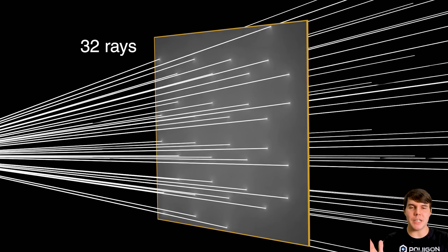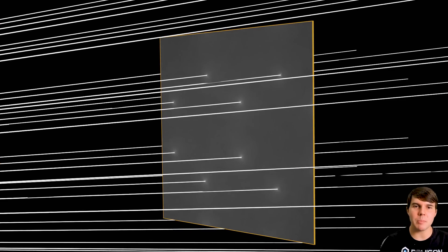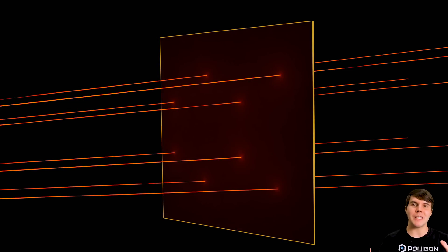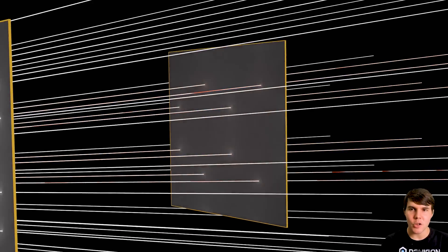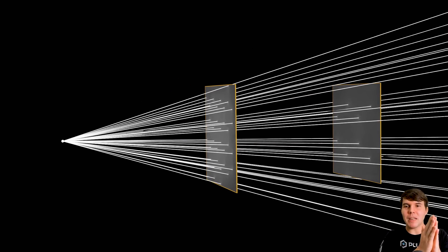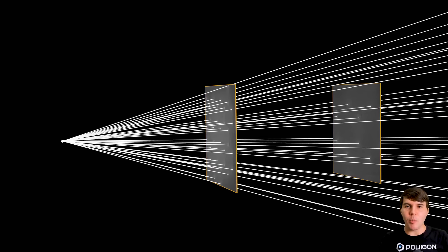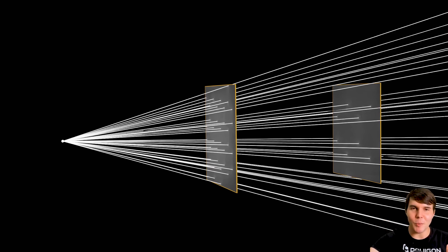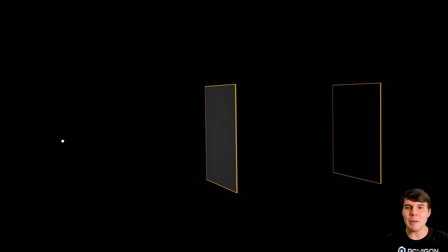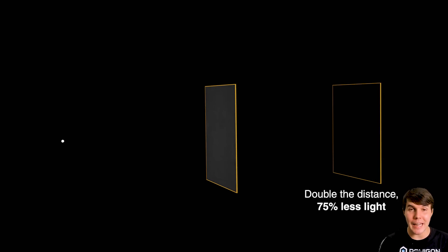Now, if we were to double the distance that plane is from that light source — move it double the distance behind it — we would now only be receiving 8 rays, which is one quarter of the amount of light. The reason this is so much less is because, as we go further and further back, the spread of those rays misses the object. This is assuming that first plane would not be casting any shadow on the one behind it. Just the distance from the light source means it's going to be receiving 75% less light overall than the one in front of it.